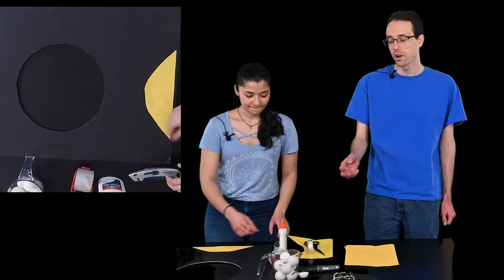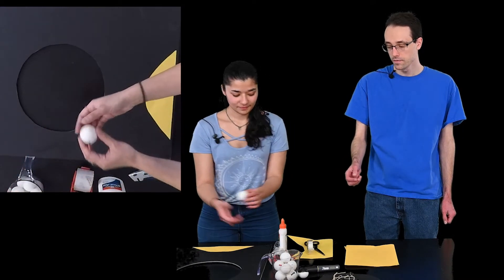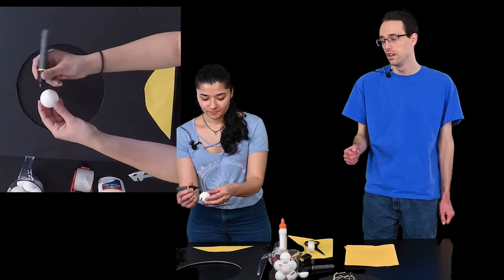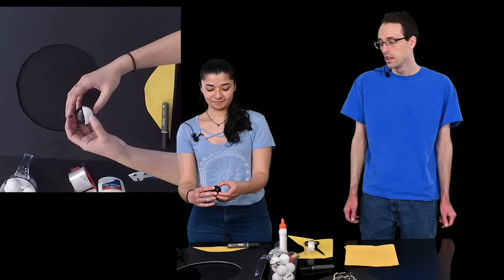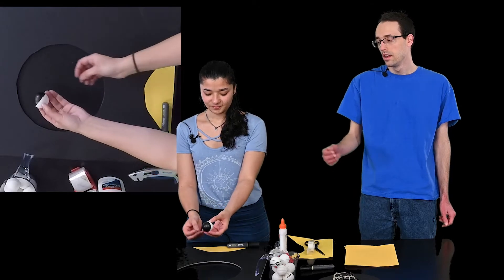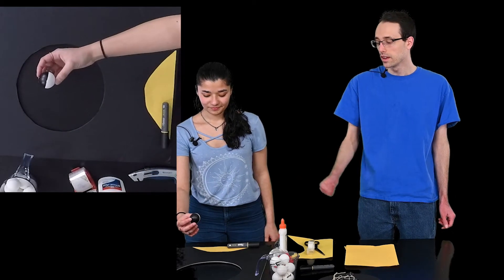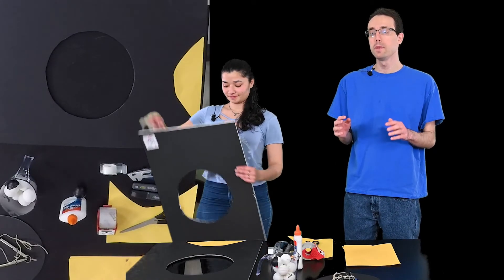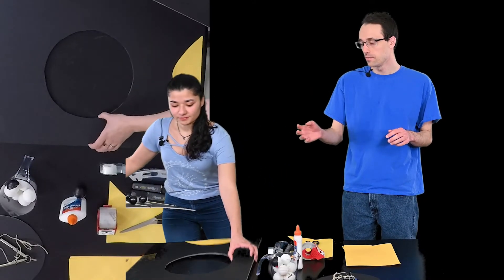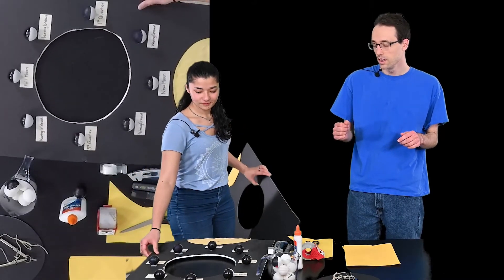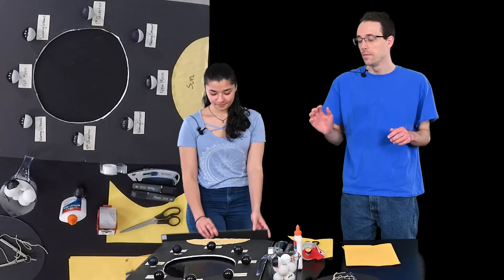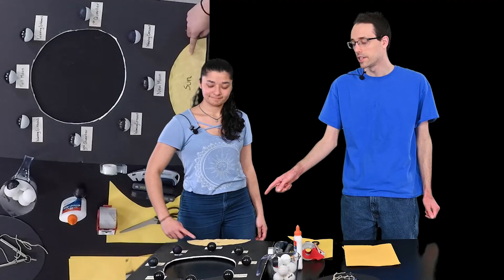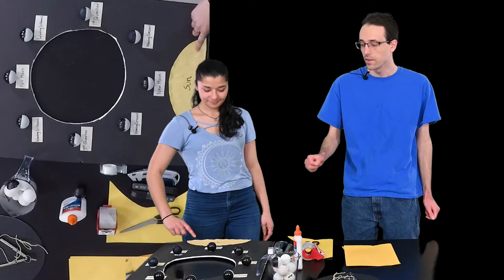Next, take your ping pong ball and your marker and color in exactly half of the ping pong ball. This is what it should actually look like. Next, glue or tape the ping pong balls as shown here. Make sure that the white half of the ping pong balls faces the sun for each of the configurations.